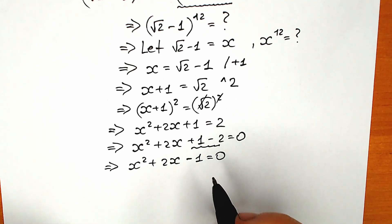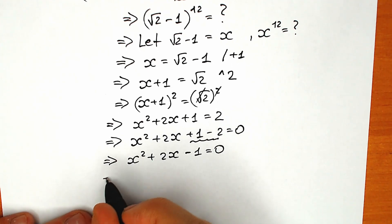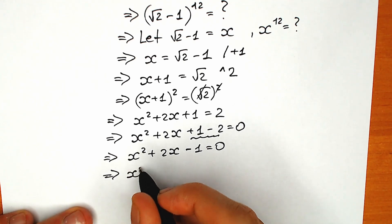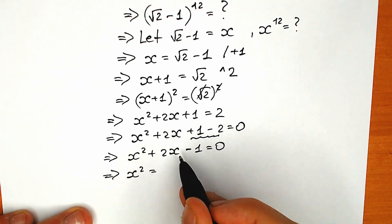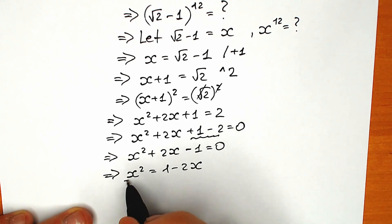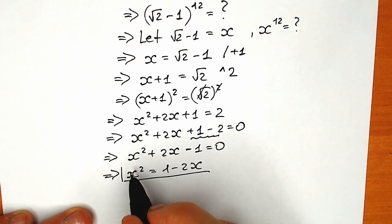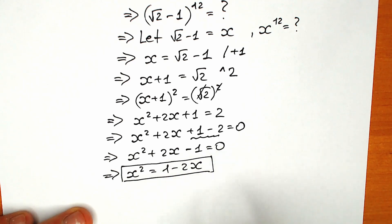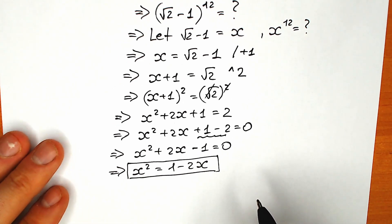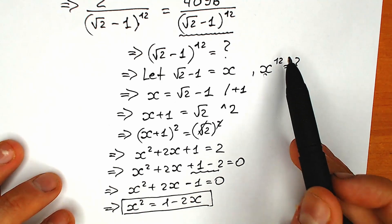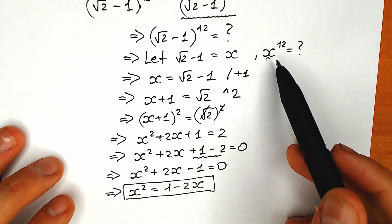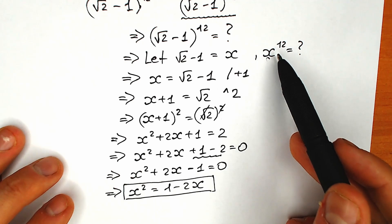Right now I'm not going to solve this equation. I just want to express the second power through the first one. As a result we have x squared equal to 1 minus 2x. This is the expression we really need. And don't forget that we need to find x to the power 12. We know everything about x squared, so the main thing now is to get closer and closer to x to the power 12.